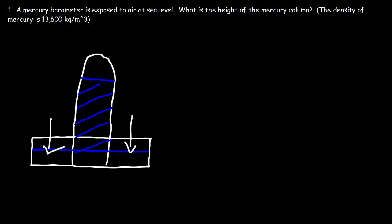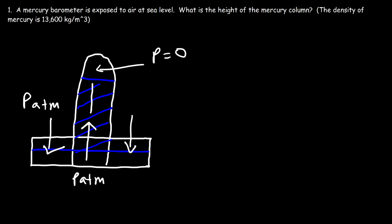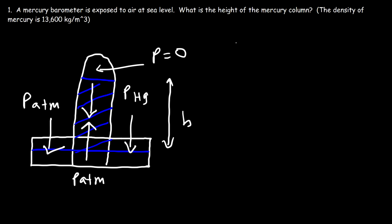So how can we calculate the height of the mercury column? The atmospheric pressure is transmitted through the fluid, creating an upward atmospheric pressure that pushes the fluid up. The weight of the fluid creates its own pressure, which I'll call P_Hg — the pressure created by the weight of the mercury fluid above a particular height level. For the system to remain at equilibrium, these two pressures must be equal to each other. Since pressure is force over area and the area is the same, these two pressures must be equal.